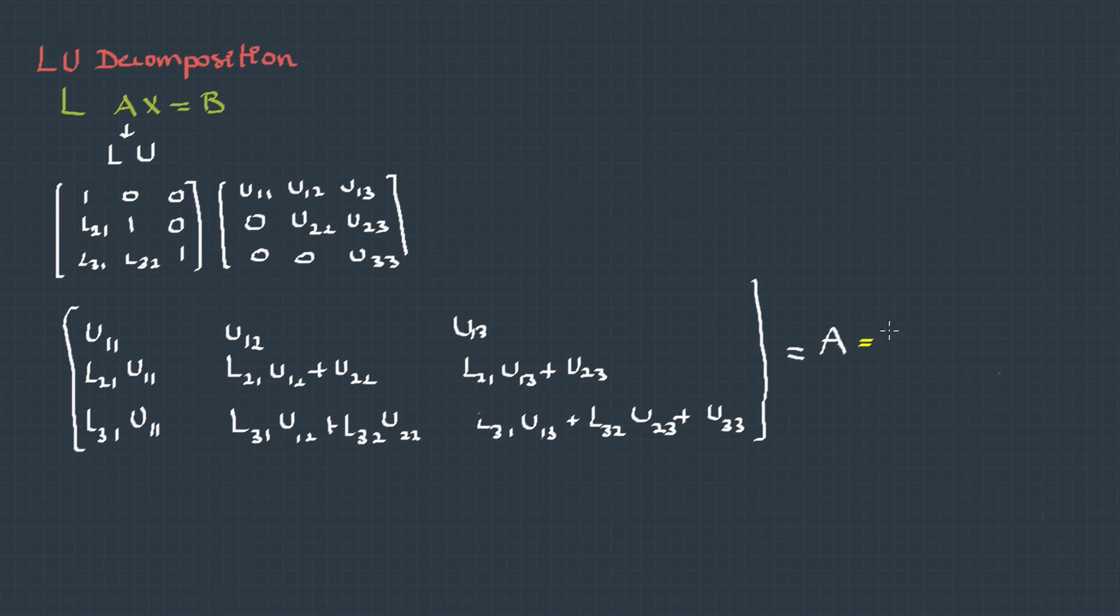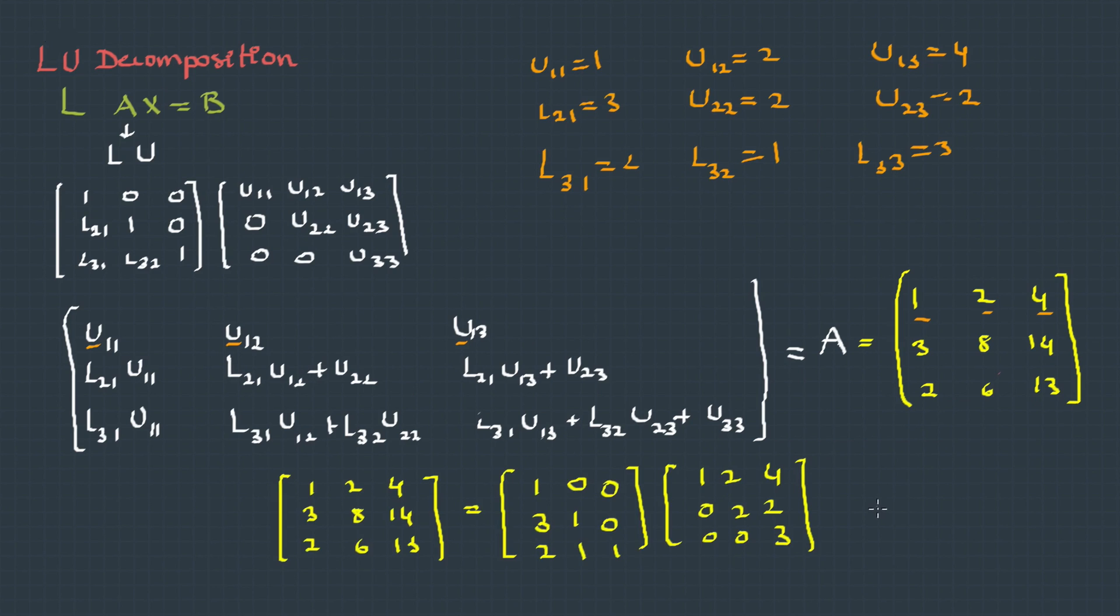Suppose A equals this one. By comparison, we can say U11 equals 1, U12 equals 2, and U13 equals 4. Now, putting these three into these equations, we can get the rest of the elements. So the LU decomposition for this particular matrix is - for this coefficient matrix A, this is L and this is U.